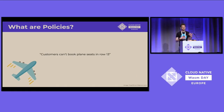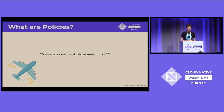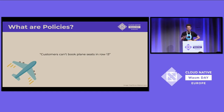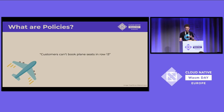I like to think of policy as a more general encoding of business rules and functions. Many of you will have flown here to Amsterdam and you won't have been able to book a plane seat in row 13. It's common for planes in the Western world to not feature row 13 at all, and that's a policy that needs to be enforced in a system that handles the booking of plane tickets.